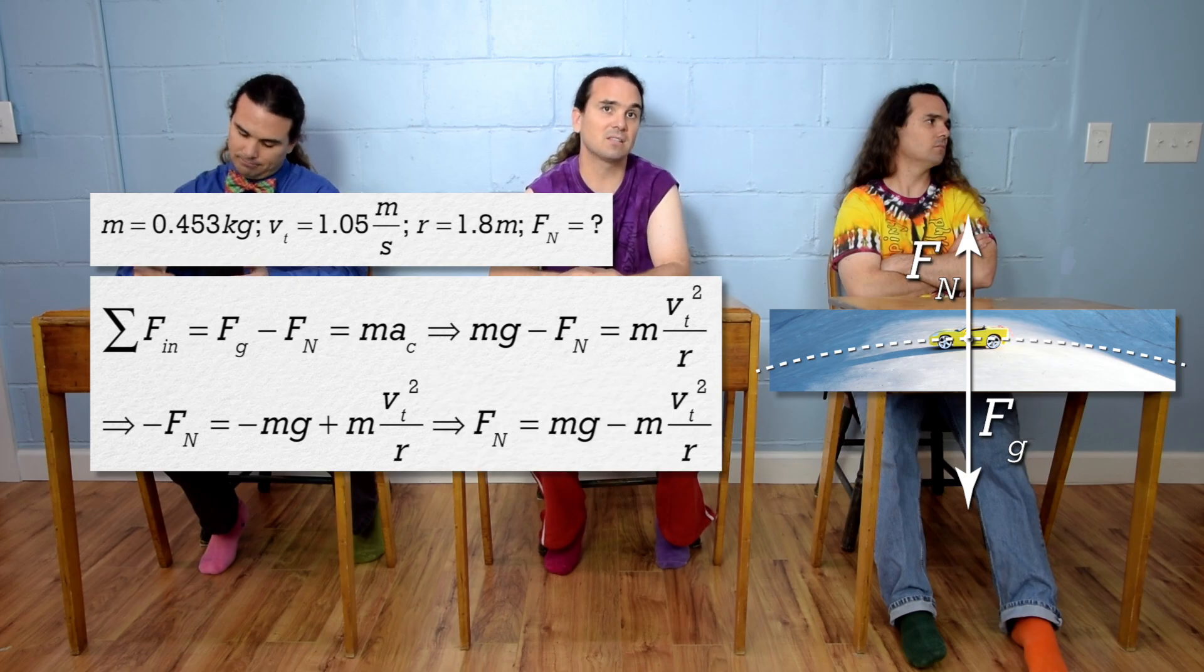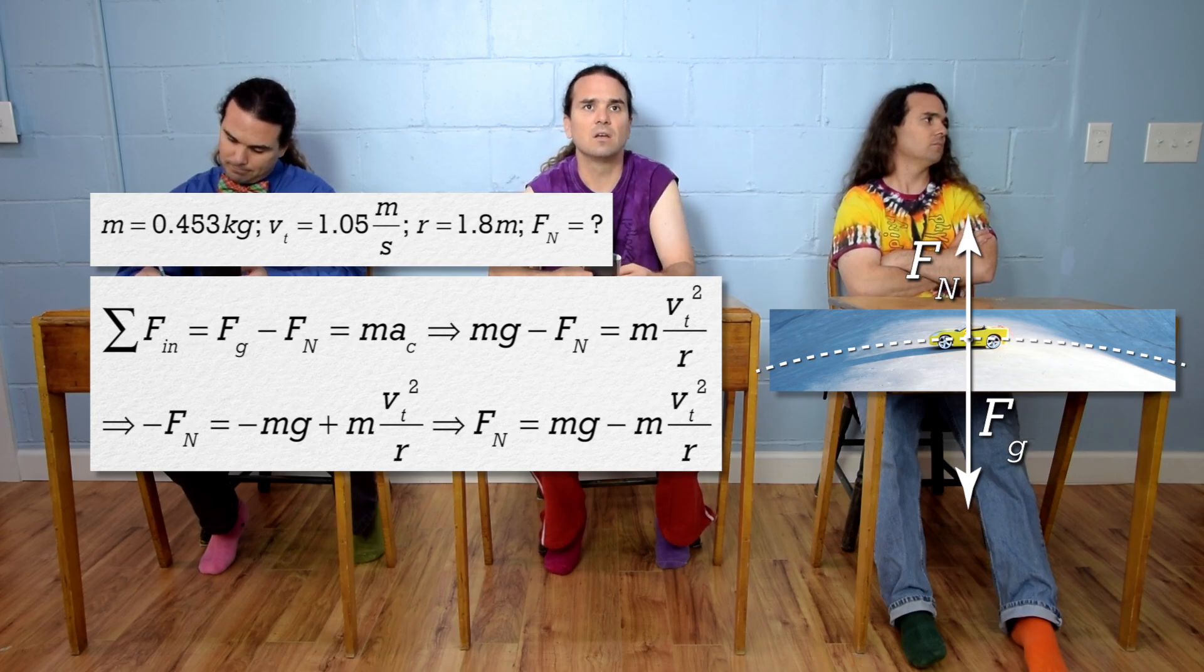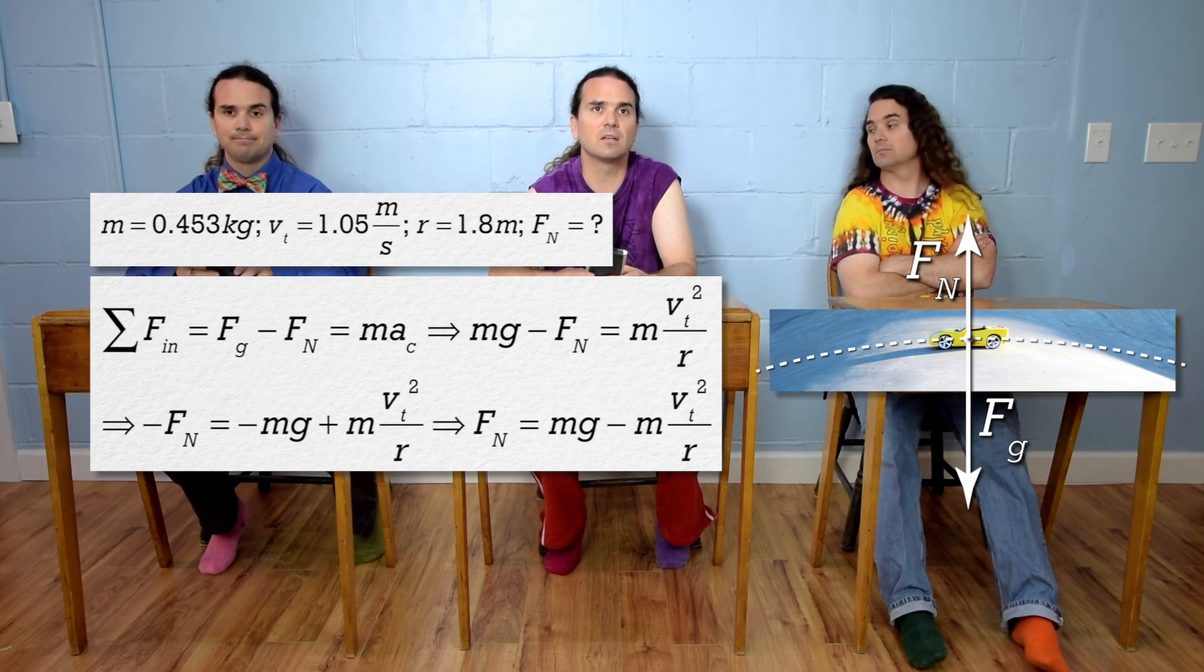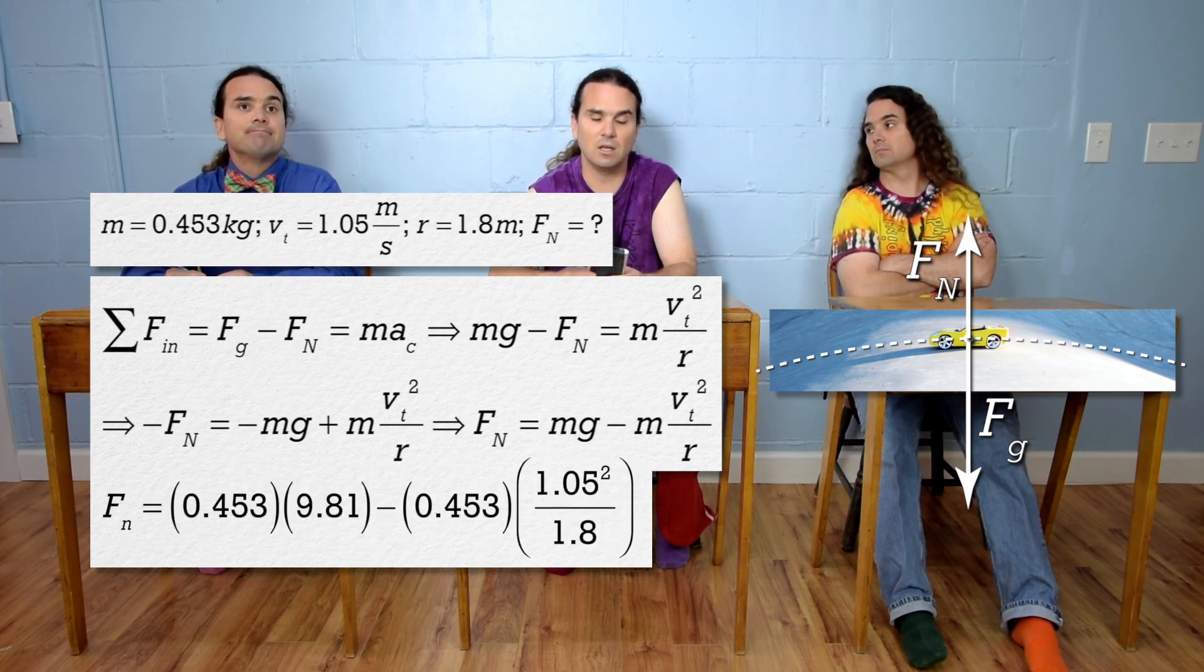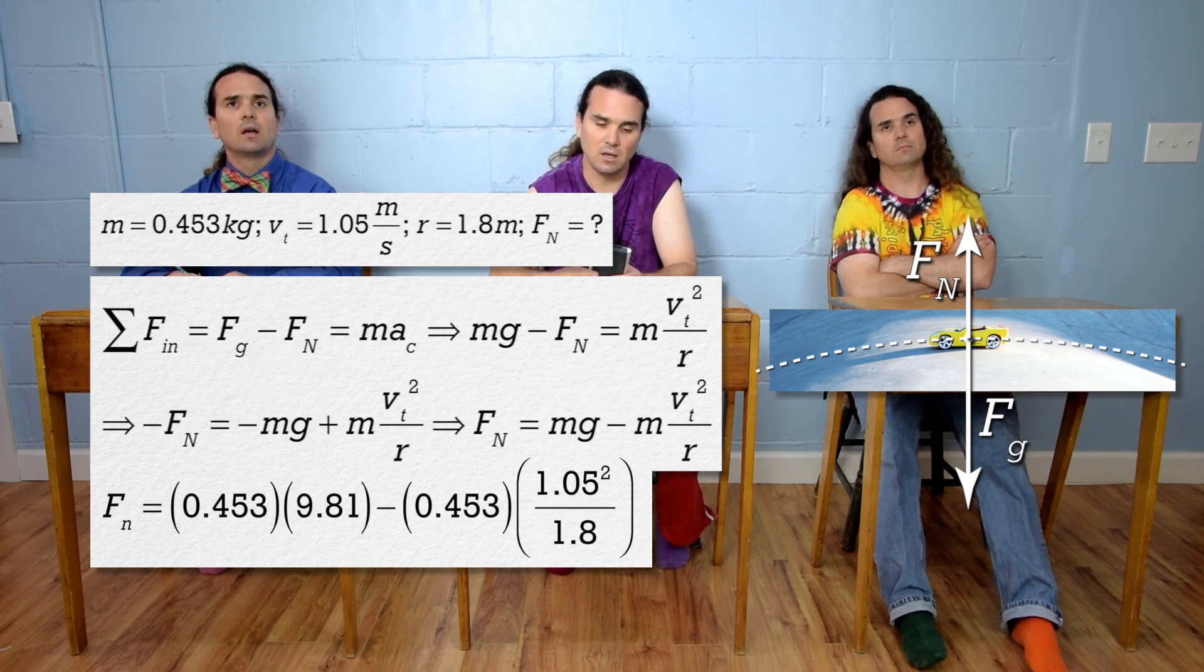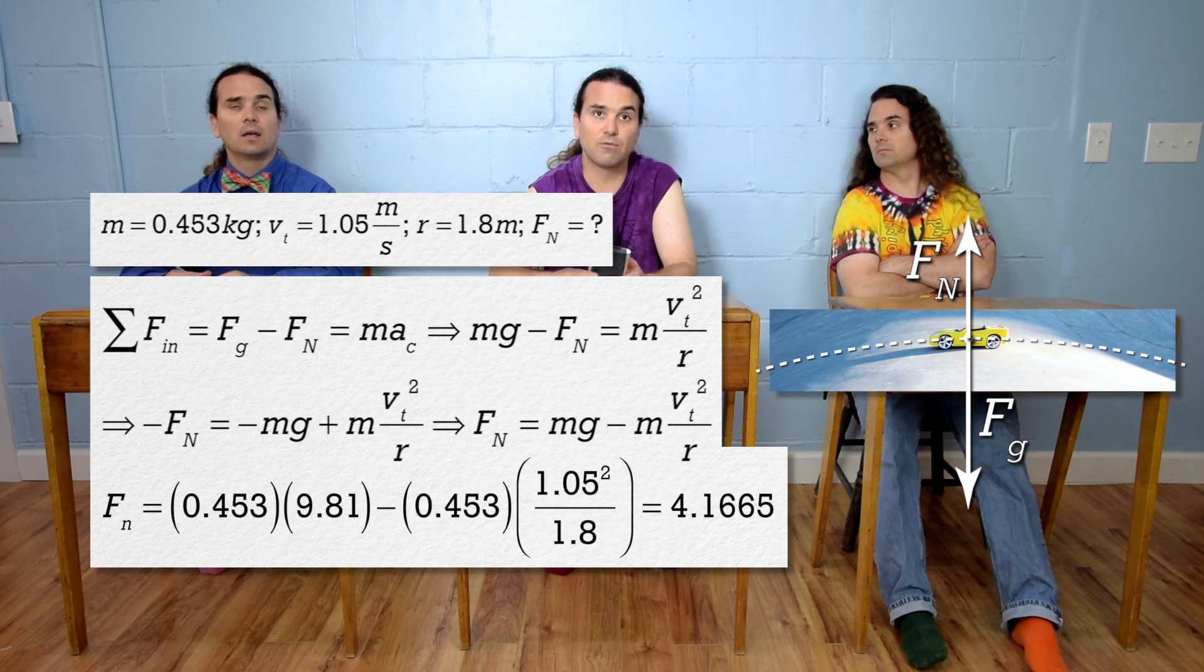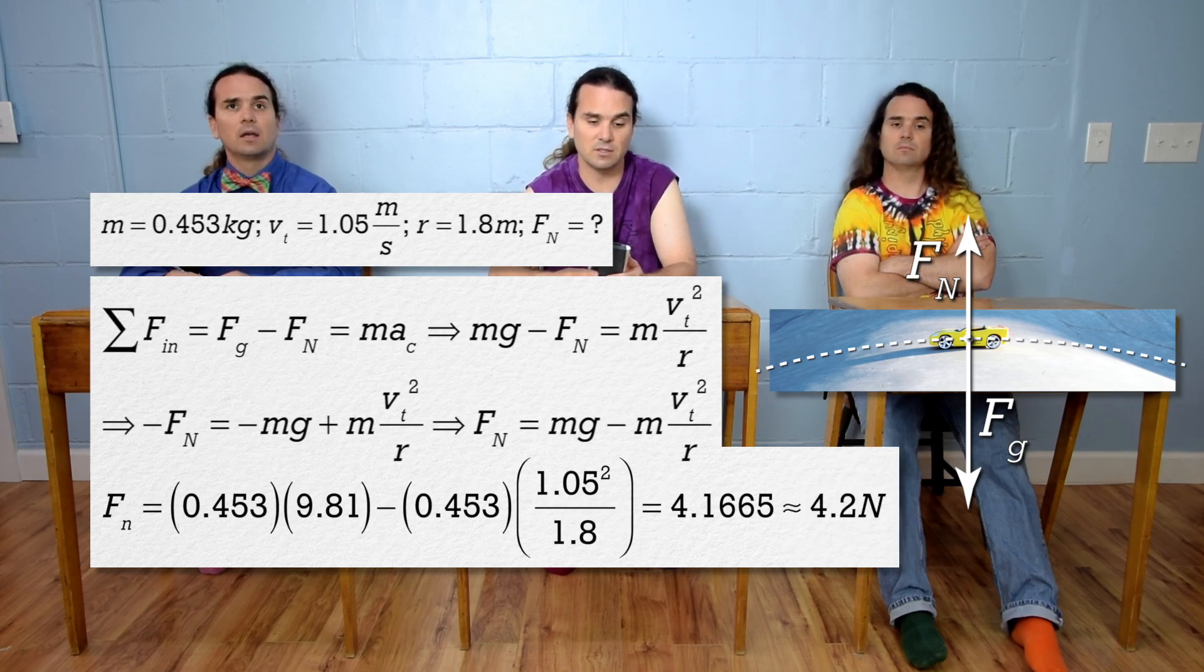We can substitute in numbers to get 0.453 times 9.81 minus 0.453 times 1.05 squared divided by 1.8, which is 4.1665 or 4.2 newtons with two significant digits.